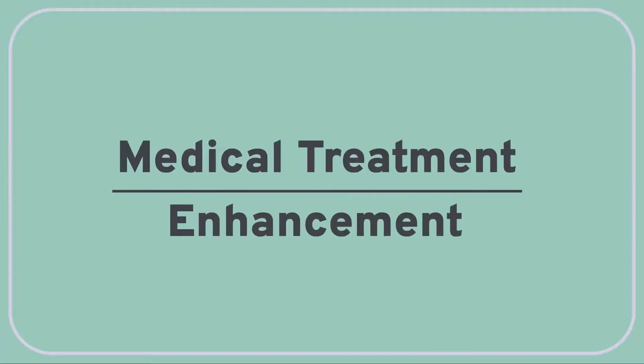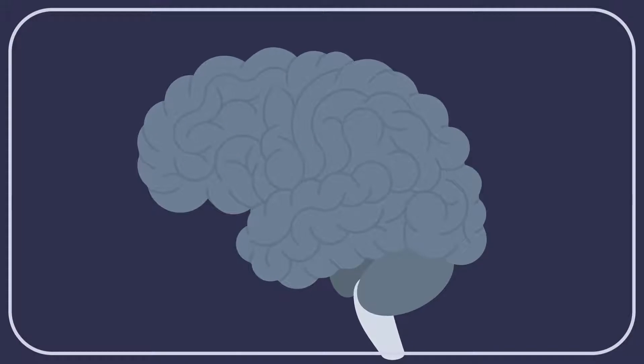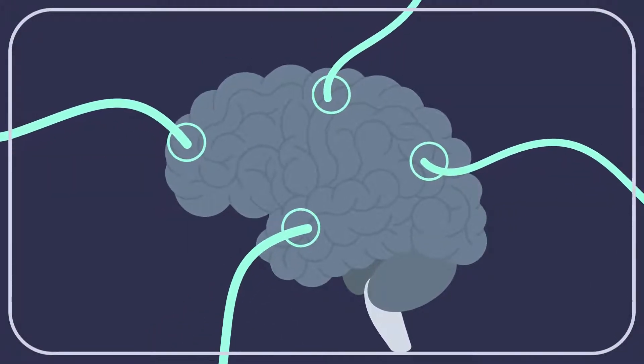In this Wireless Philosophy video, we're going to ask: what's the difference between a medical treatment and an enhancement? In deep brain stimulation, electrodes are surgically implanted in the patient's brain. A neurostimulator sends electrical impulses into the electrodes, changing the brain's activity in targeted areas.